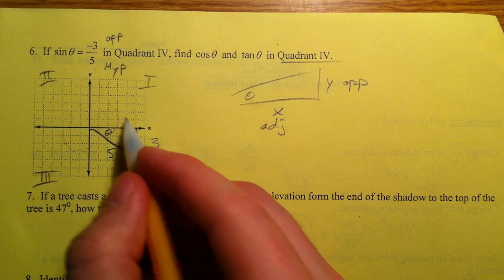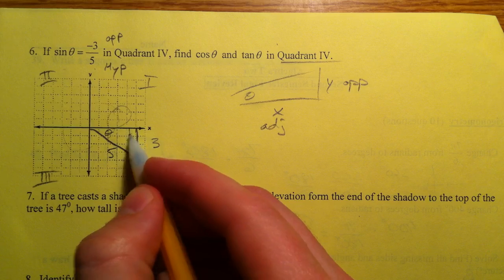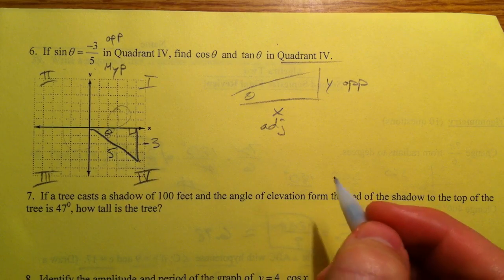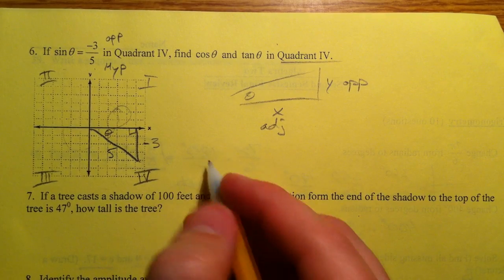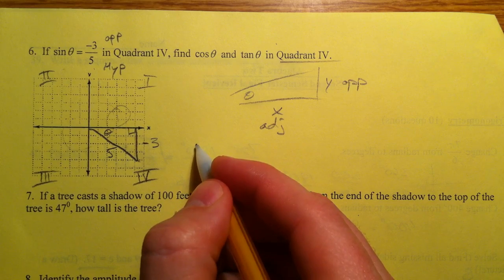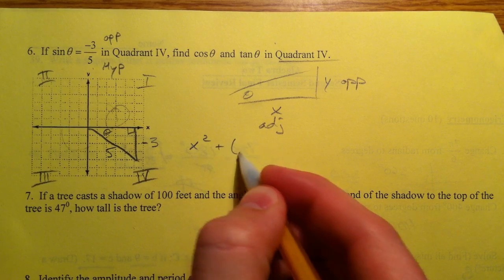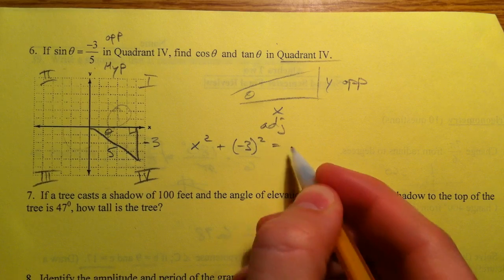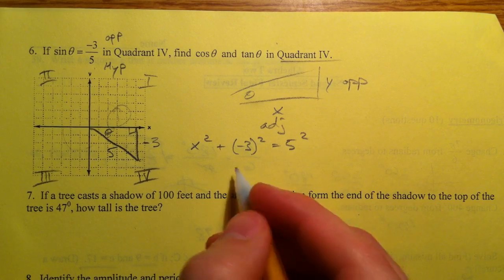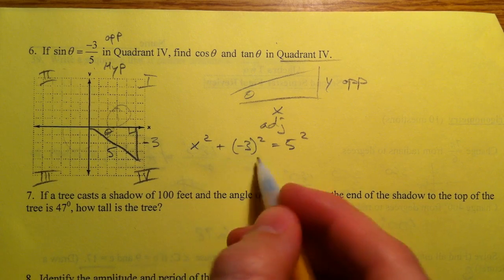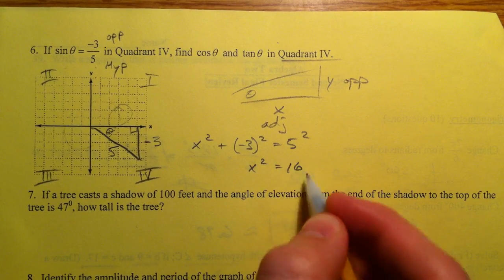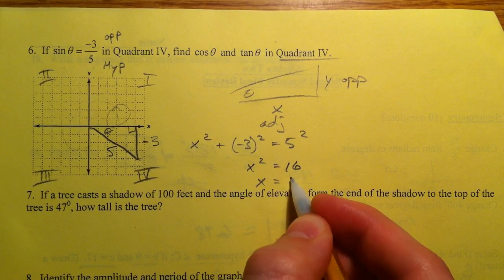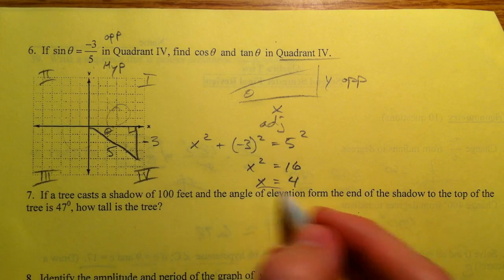And so that would make this side, and sorry, this y has to be negative. And so we can find that side by saying x squared plus negative 3 squared equals 5 squared. Or you can recognize it as a 3, 4, 5 triangle, making x equal 4.